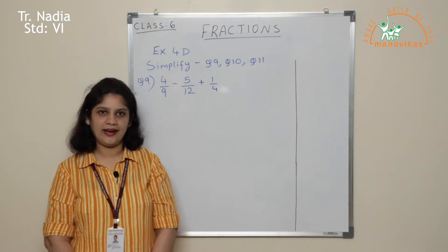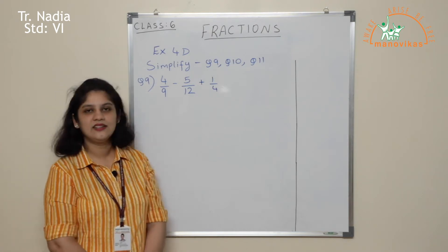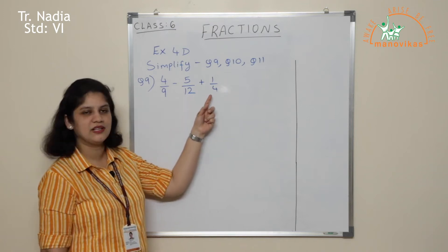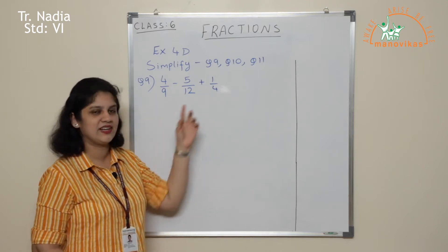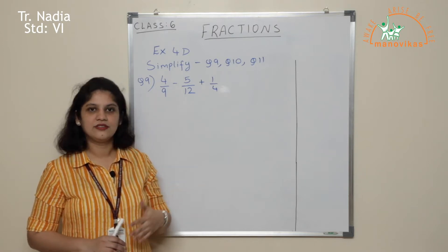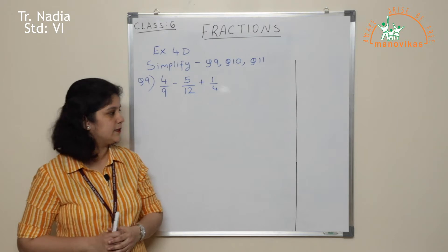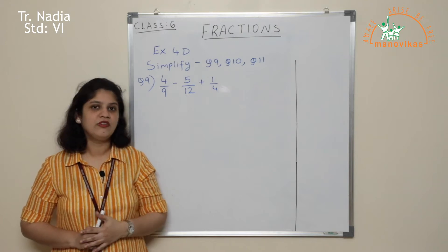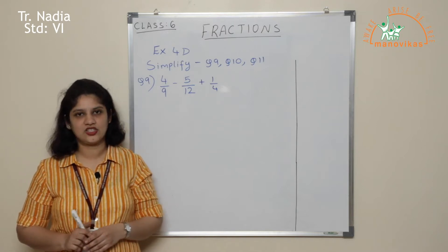Today let us move to question 9: simplify. We have 4 upon 9 minus 5 upon 12 plus 1 upon 4. Here you have mixed operations — subtraction as well as addition. These are the next version of operations on fractions where we operate with two operations. As you can see, these are unlike fractions — their denominators are different. So before we begin, we have to find the LCM and make these fractions like.